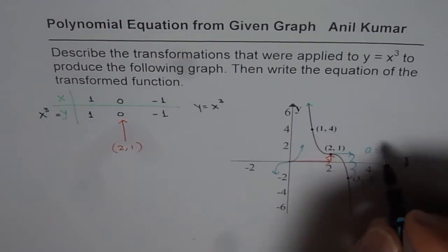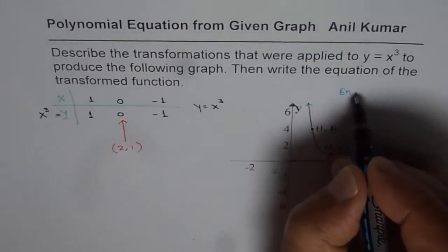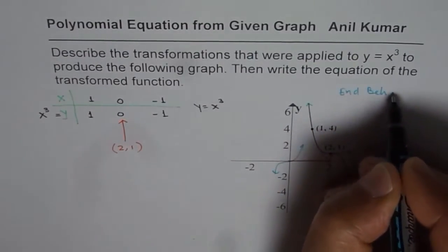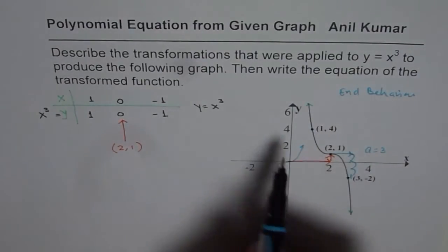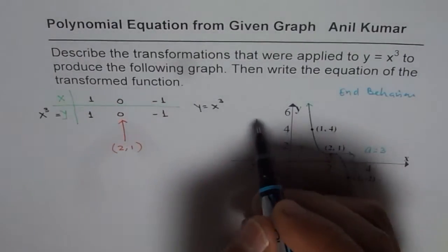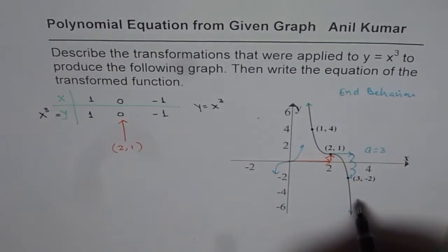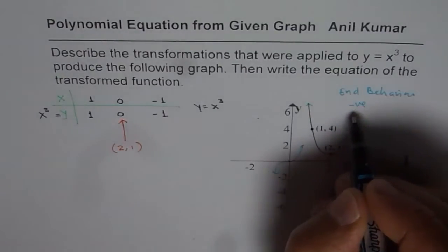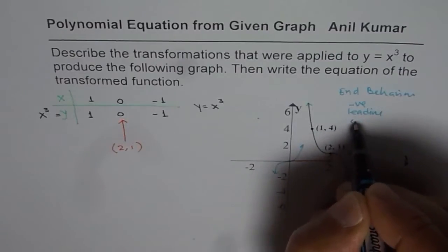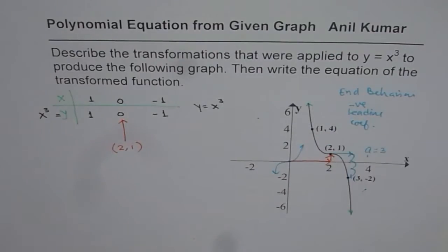You would also find reflection from end behavior. So for reflection, we can say end behavior. The graph moves from quadrant 3 to quadrant 4. It means that the leading coefficient is negative. So negative leading coefficient.